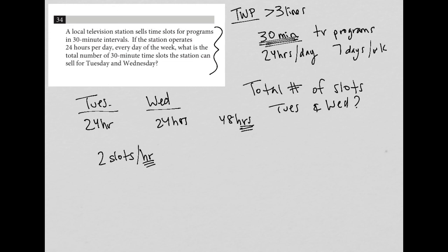So if I have a total of 48 hours, and I'm getting two slots per hour, then I'm just going to multiply 48 times two, which gives me 96 slots. Again, that's only for Tuesday and Wednesday. So that will be my final answer.